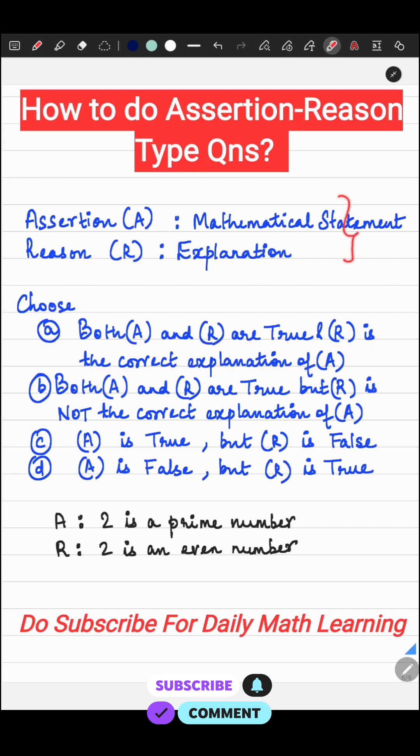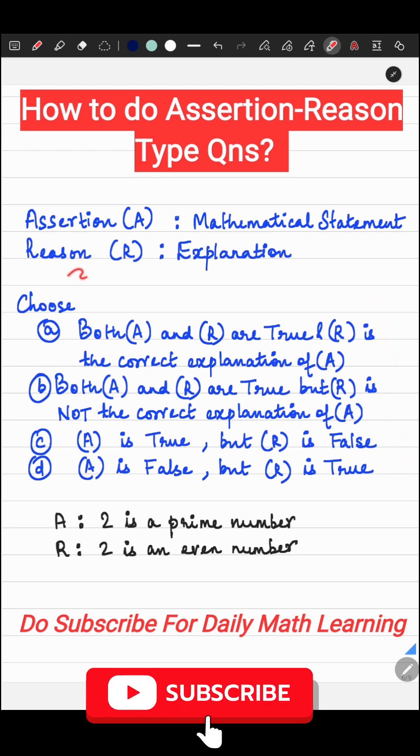If both are true but R is not the correct explanation for A, then you will choose B. You will choose C if A is correct and R is false, and you will choose D if A is false and R is true.